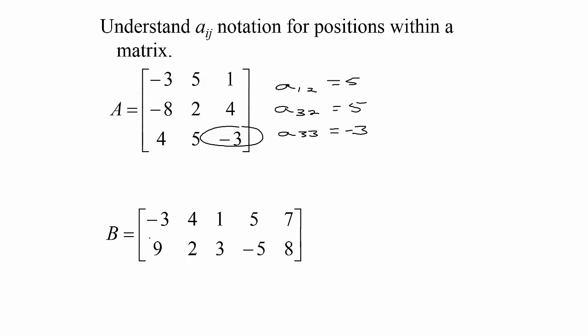If the matrix has a different name, we use the corresponding lowercase letter. So if we wanted b_23, that would be the entry in the second row, third column, which is 3 in this case.